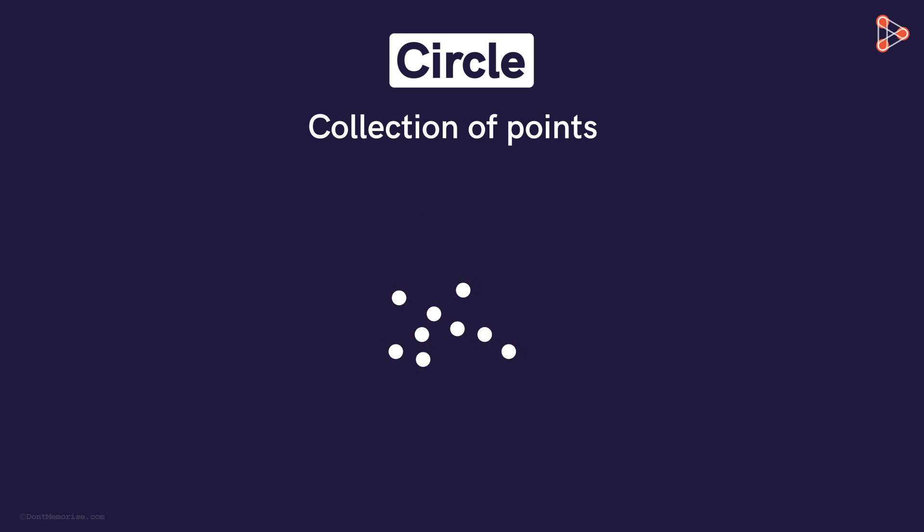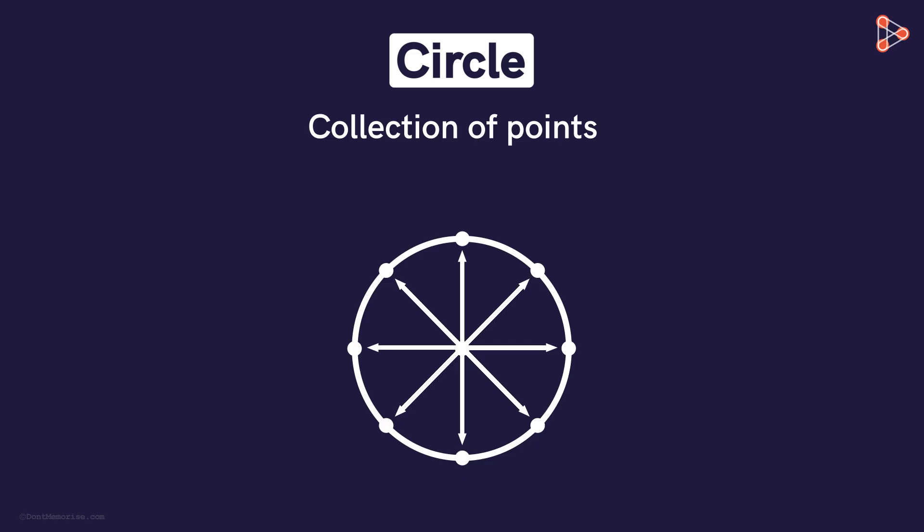That's right. A set of points on the same plane which are at an equal distance from a single point form a circle. Yes, a set of points on the same plane at an equal distance from one single point. This single point is called the center of the circle and this distance between the center and all the points is called the radius of the circle.